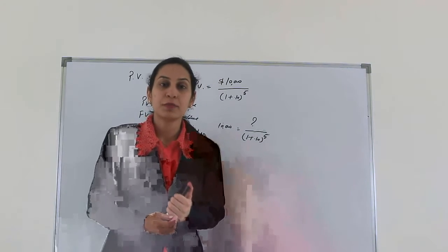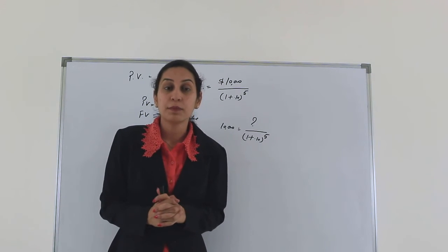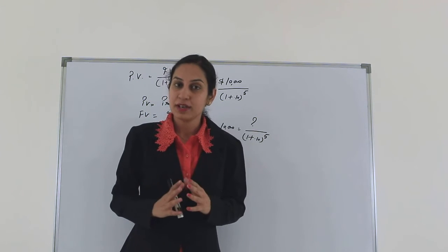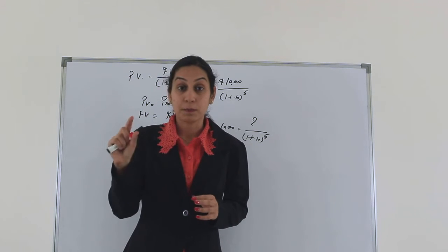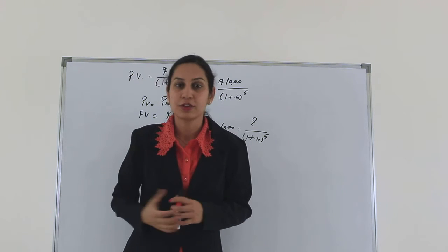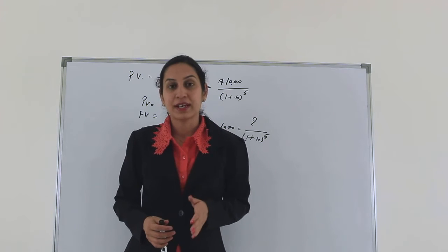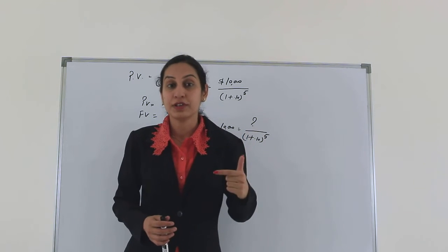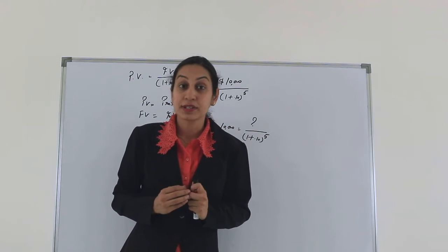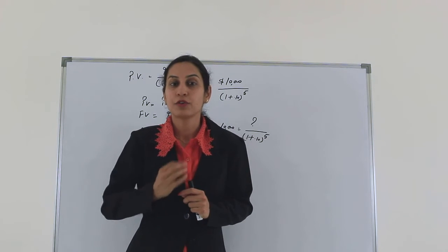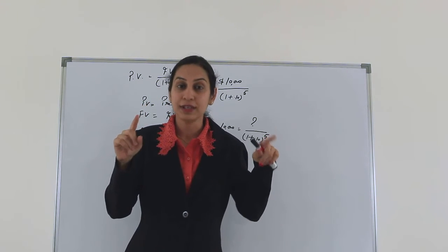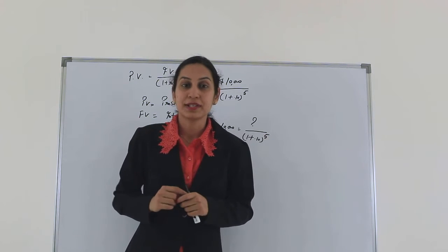The second method is to use a present value table, available online. On the table, the top row shows different rates — 2%, 5%, 10%, 15%, and so on. The left column shows the number of years: 0, 1, 2, 3, 4, and so on. For example, to find the present value factor for 2% for 2 years, look up 2% from the top and 2 years from the left. This is how we read the present value table.